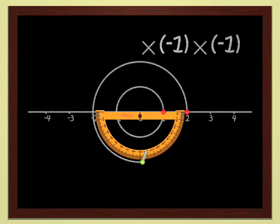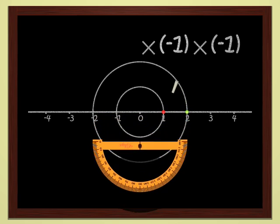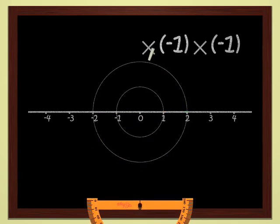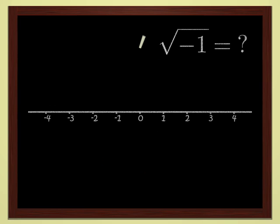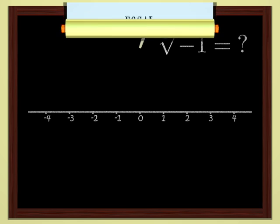Therefore, there is no number which, multiplied by itself, yields minus one. Another way of saying this is that minus one has no square root. But of course, we are underestimating the inventiveness of mathematicians.